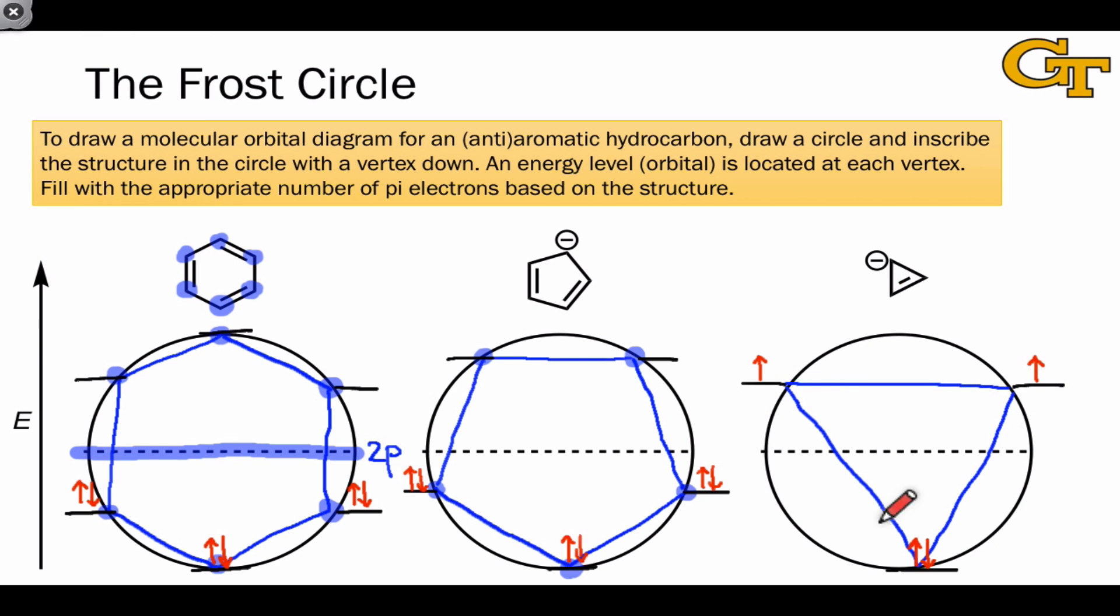From this orbital energy diagram, we see very clearly why this molecule is anti-aromatic, as it contains two unpaired electrons in anti-bonding molecular orbitals.